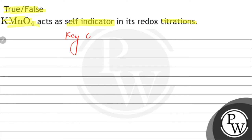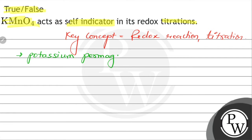To solve this question, the key concept involved is redox reaction and titration. Here we will write that potassium permanganate has a deep violet colour which is highly visible.